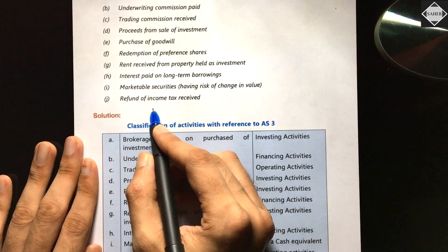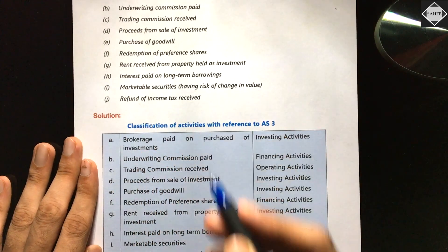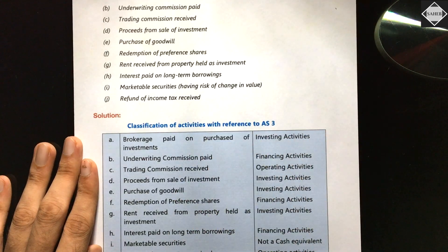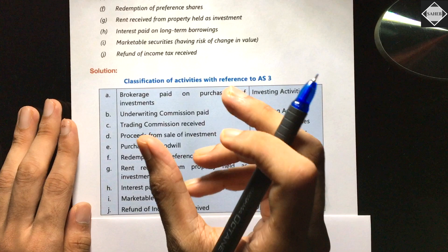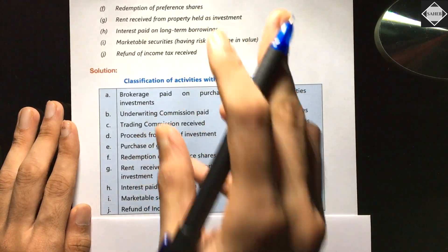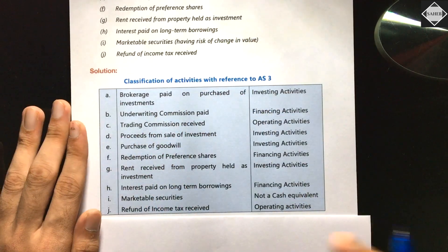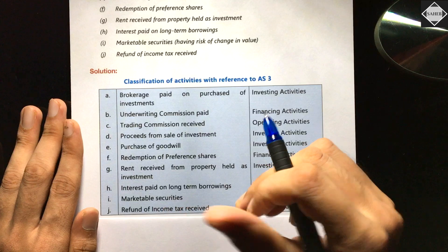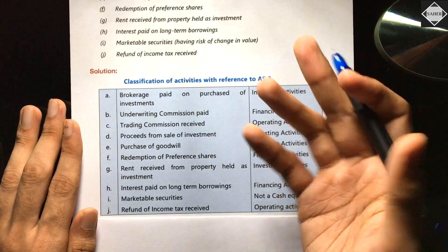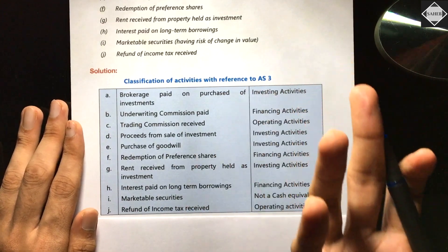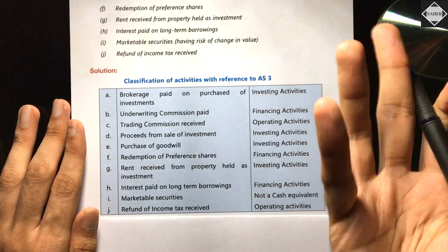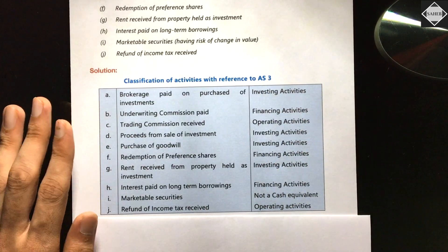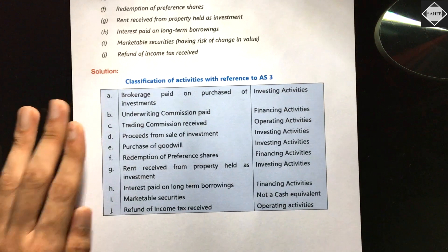Refund of income tax received: income tax paid or received is always related to operating activity, unless you can trace it to a specific activity. For example, if you sell a long-term asset, the capital gains tax on that would go under investing activity. But generally, tax is always operating. That completes Problem 8.